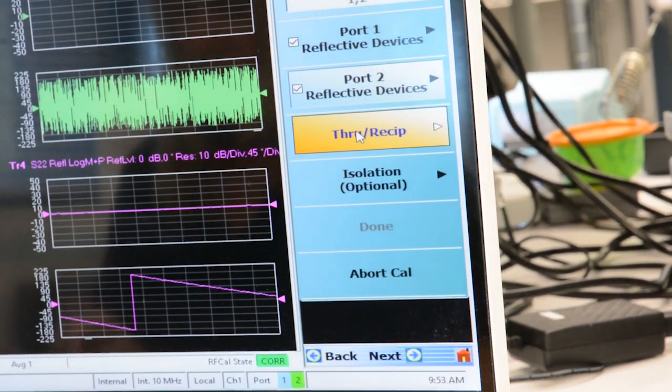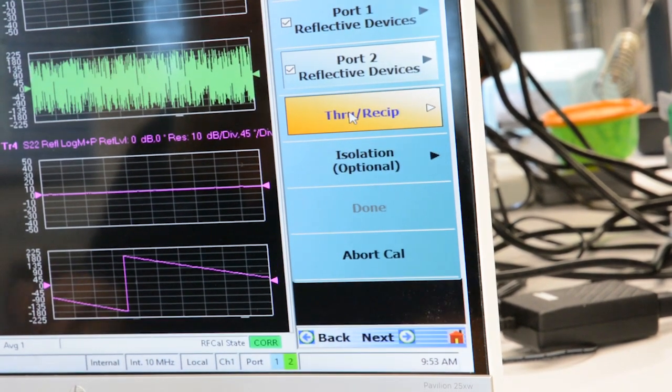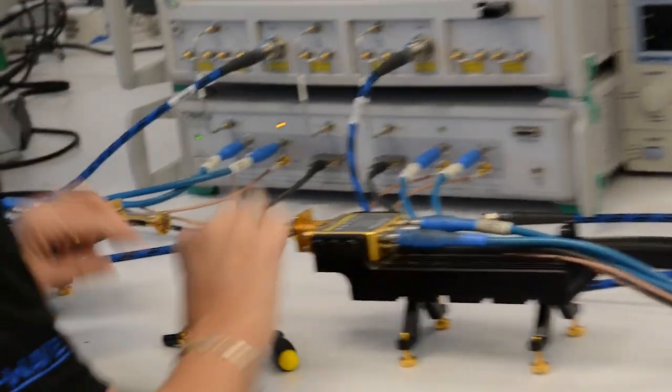Now we need to do a thru calibration, and we'll attach the waveguides together to port 1 and port 2.